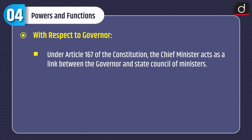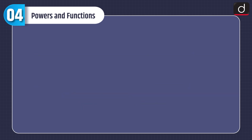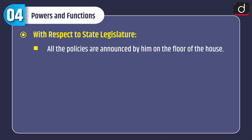With respect to the Governor, under Article 167 of the Constitution, the Chief Minister acts as a link between the Governor and the state council of ministers. The Chief Minister advises the Governor regarding the appointment of important officials like the Advocate General, Chairman and members of the State Public Service Commission, State Election Commission, etc. With respect to the state legislature, all policies are announced by him on the floor of the house, and he recommends dissolution of the legislative assembly to the Governor.